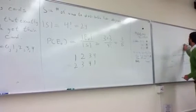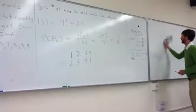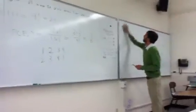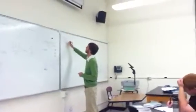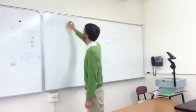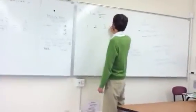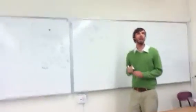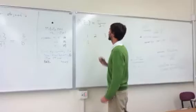Now, what about the event E-one? So to count E-one, the first thing to note is that there are four people who could get their own card. So I could choose any one of these people, and they could get their own card. So let's say we choose person one. So person one gets their own card.